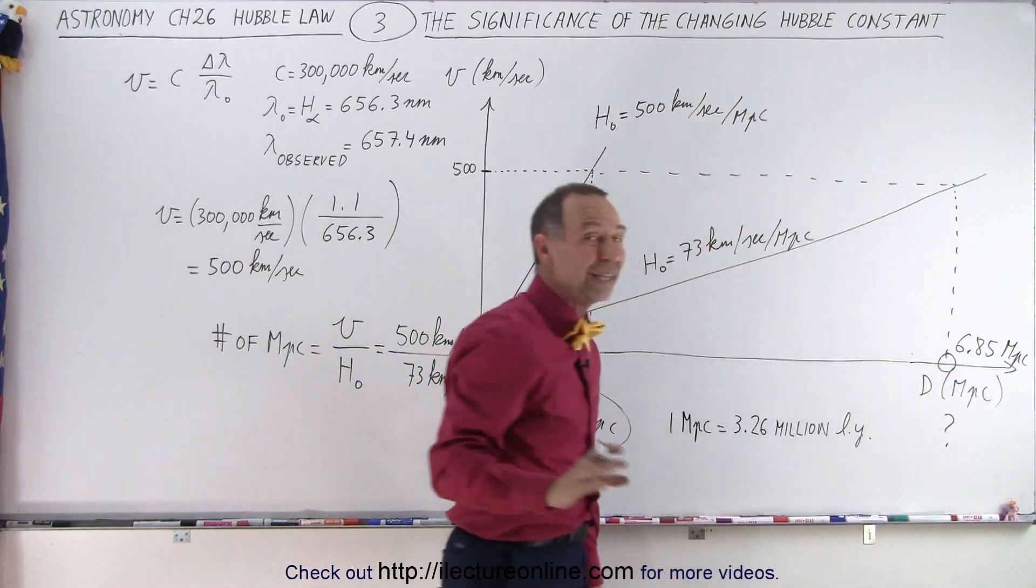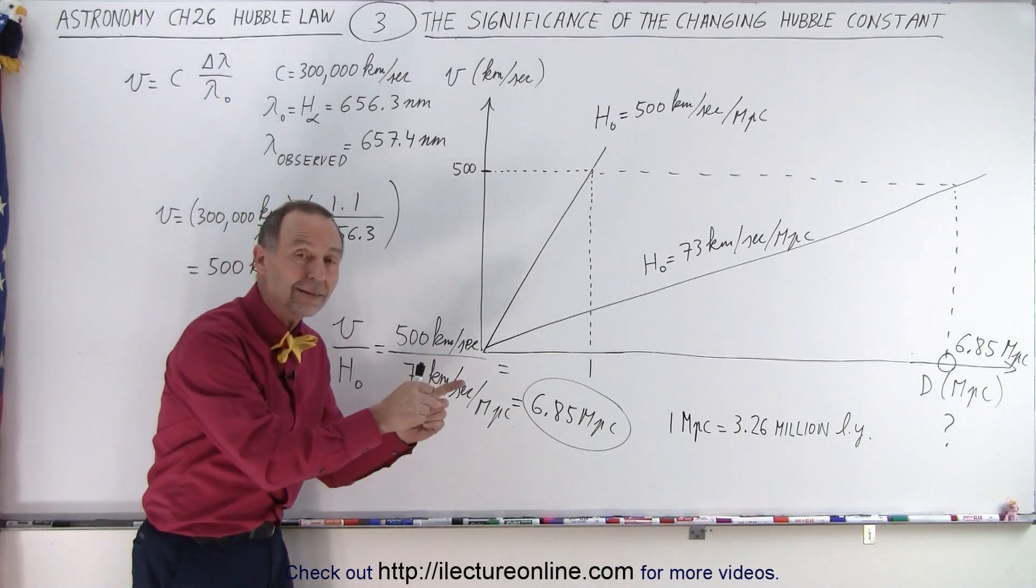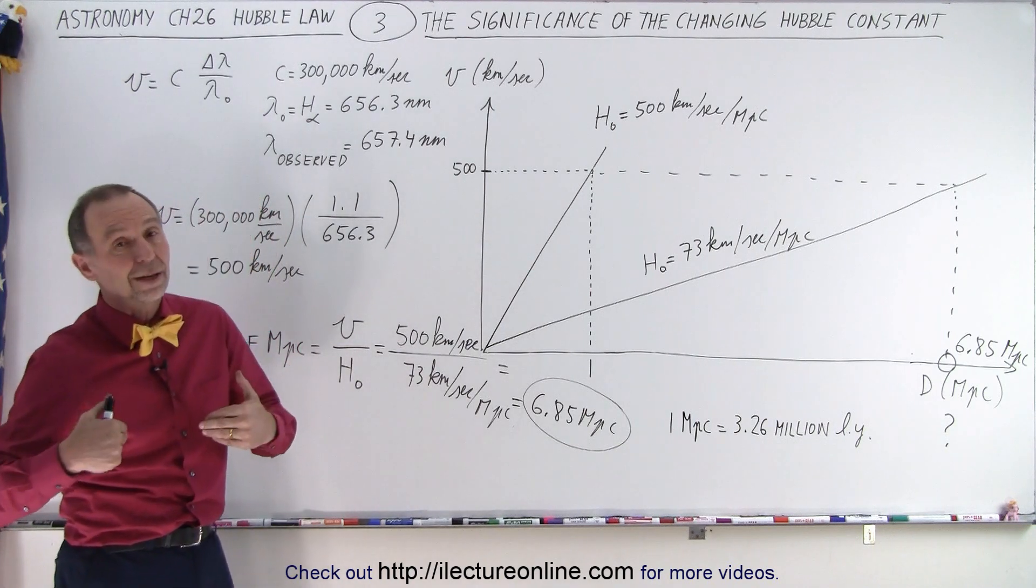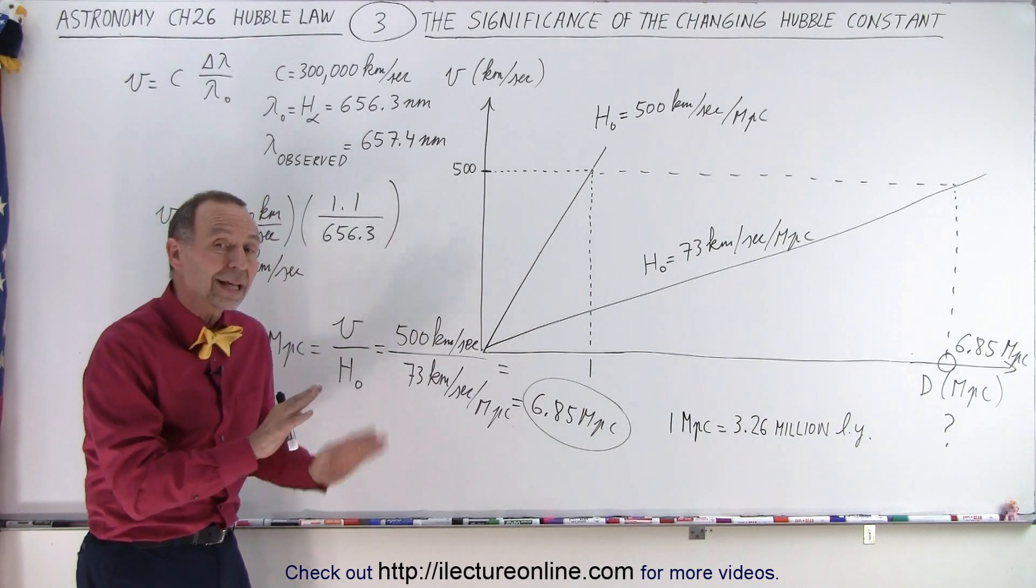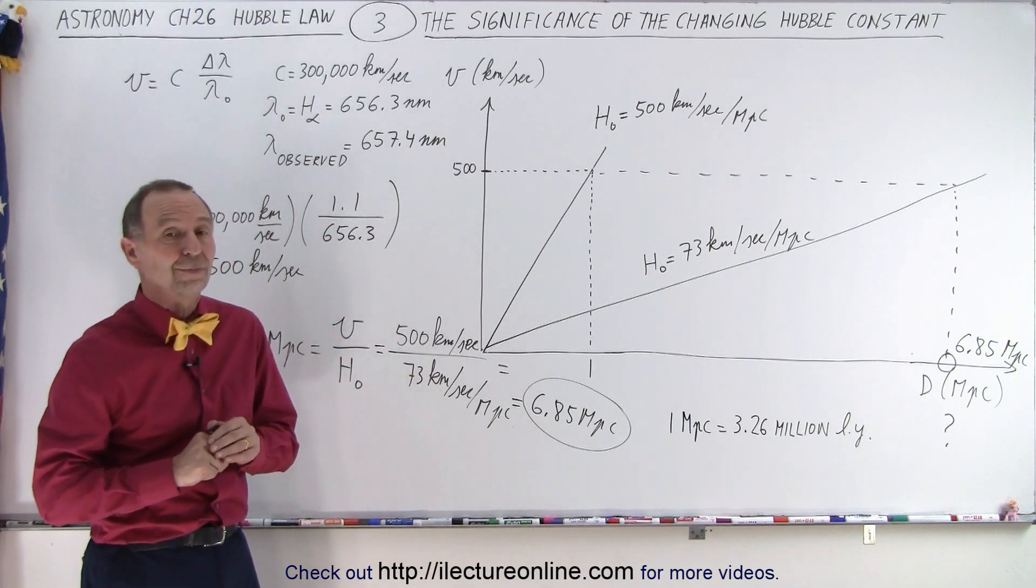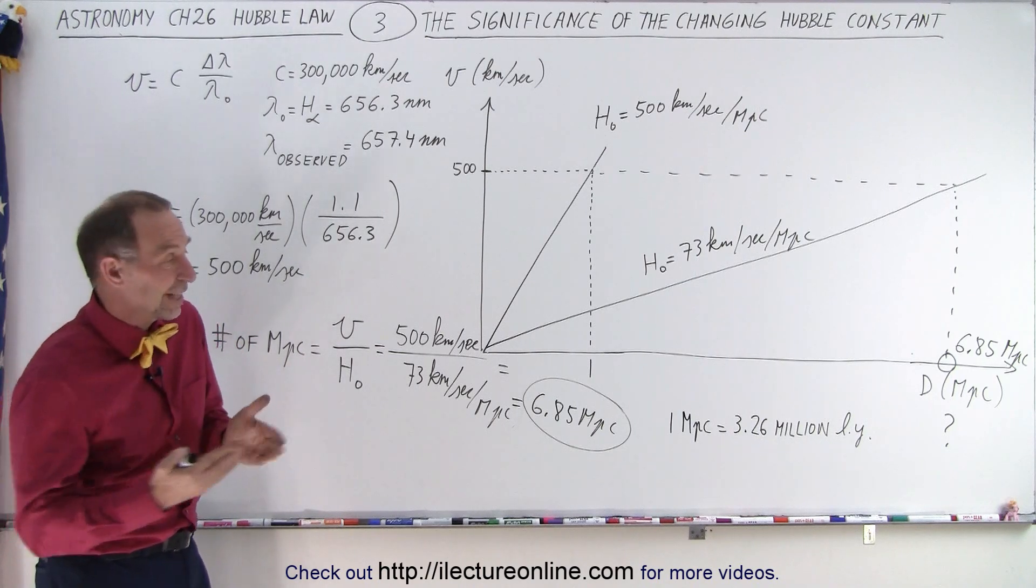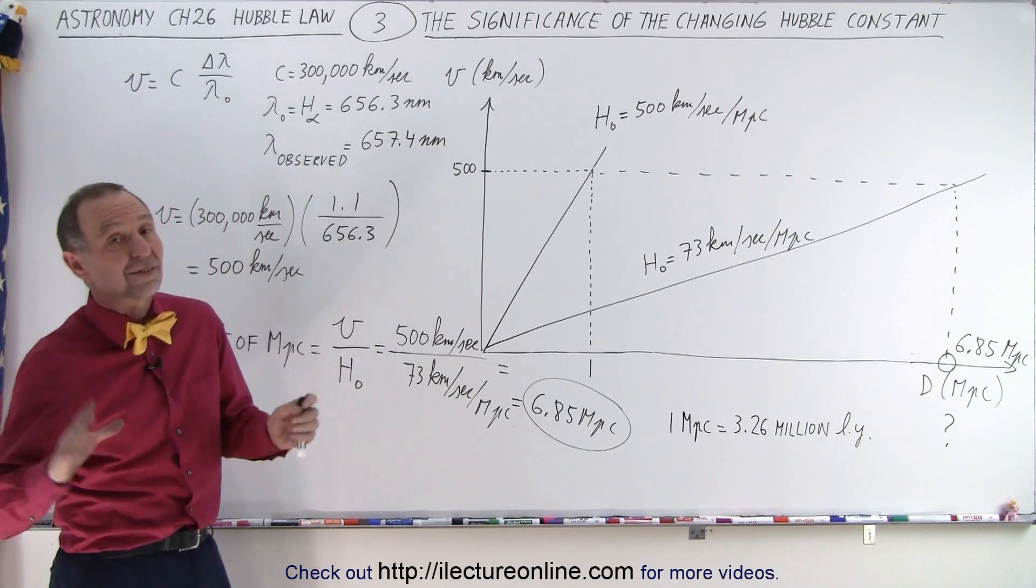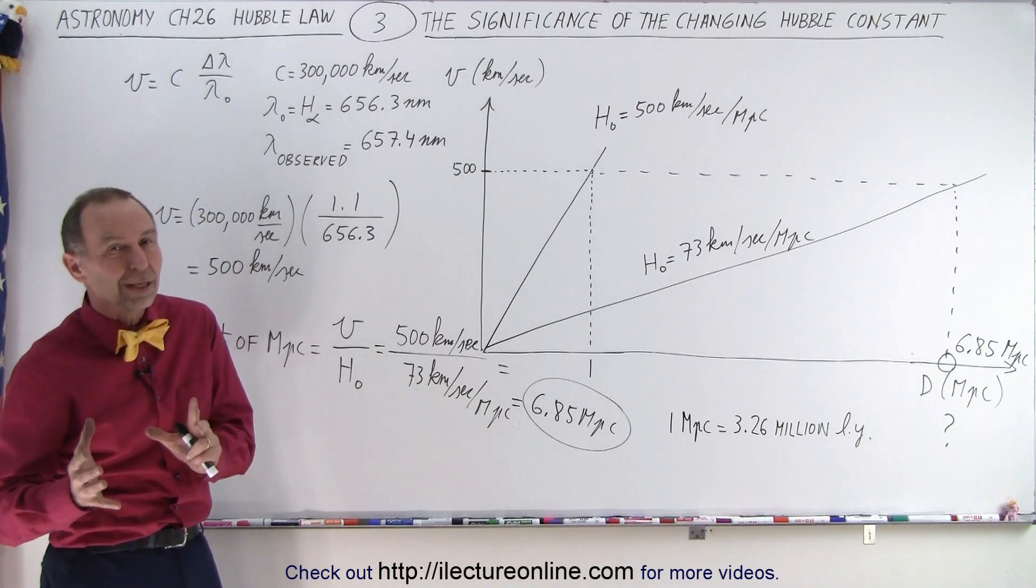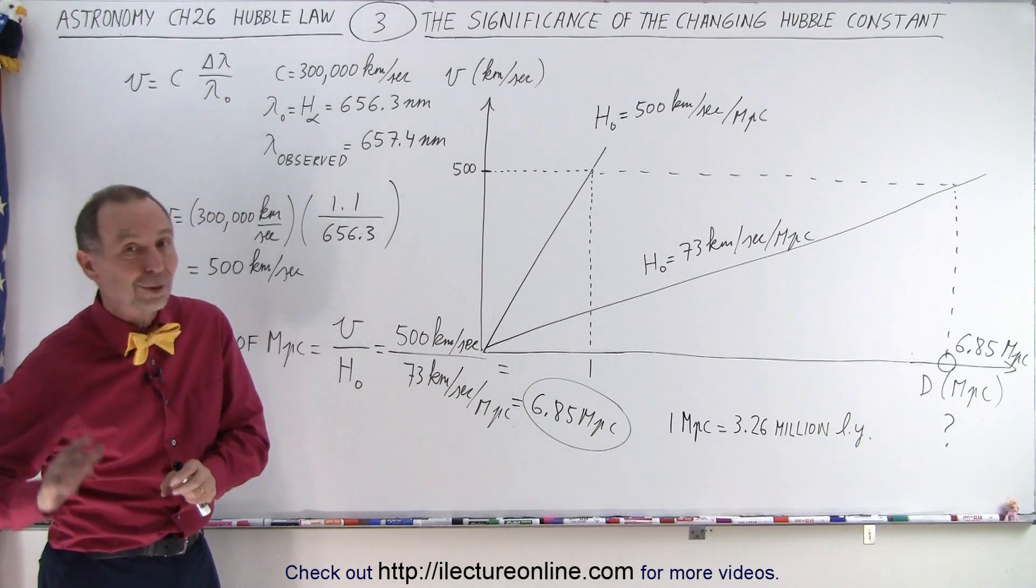So that means we get a very different picture of the universe. That very same galaxy that Hubble looked at, to him, would have looked like it was 1 megaparsec away. But now we realize that the galaxy is more like 7 megaparsecs away, which is like over 20 million light years. It gives us a very different picture of the universe, and that's why we're so interested in getting that accurate value.